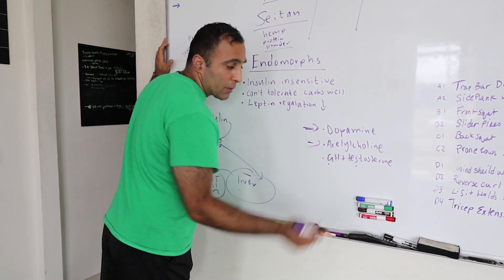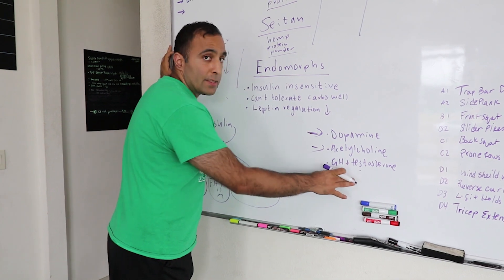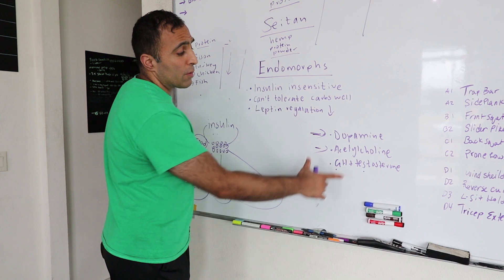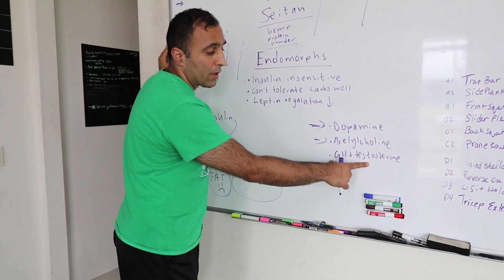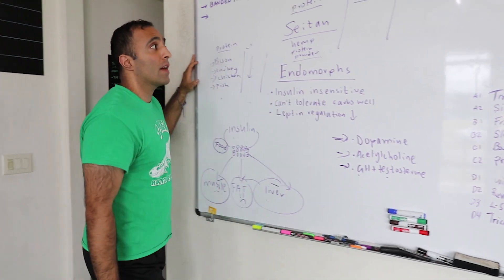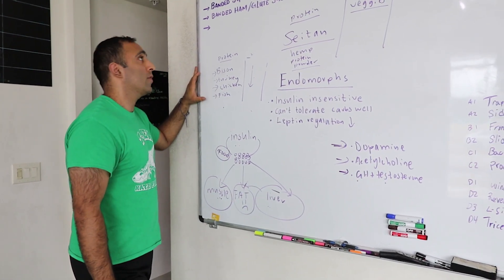Also, growth hormone and testosterone, which are hormones, get released a little more with high protein diets. That's also a good thing, but those are important in regards to retaining muscle and burning fat. Some of the things that are wonderful when you eat a breakfast that is high in protein and low in carbohydrate in the morning if you're an endomorph.